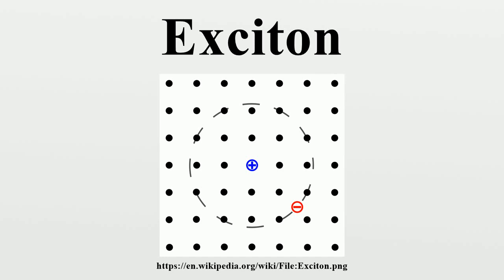Normally, excitons in a semiconductor have a very short lifetime due to the close proximity of the electron and hole. However, by placing the electron and hole in spatially separated quantum wells with an insulating barrier layer in between, so-called spatially indirect excitons can be created. In contrast to ordinary excitons, these spatially indirect excitons can have large spatial separation between the electron and hole, and thus possess a much longer lifetime. This is often used to cool excitons to very low temperatures in order to study Bose-Einstein condensation.